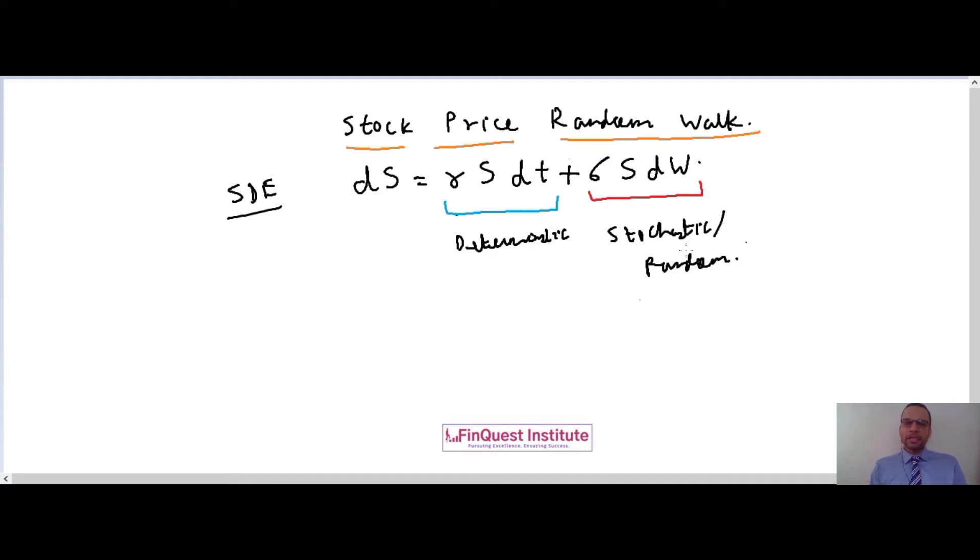Let's try to slice and dice this equation and understand what these components are. Going through the terms mentioned in this equation: r is the risk-free rate, S is the current stock price, dt is a very small time increment, sigma is the volatility, again this is the same S which is the stock price, and dW, this is what we call as the geometric Brownian motion.